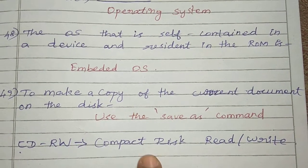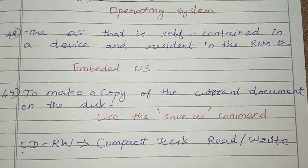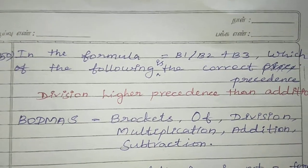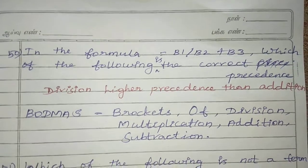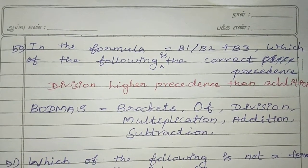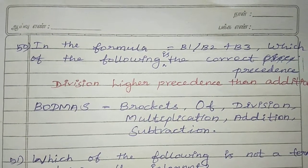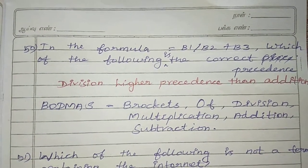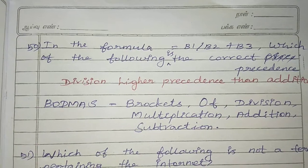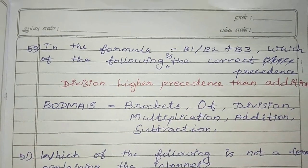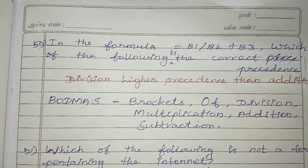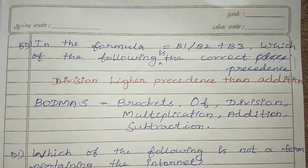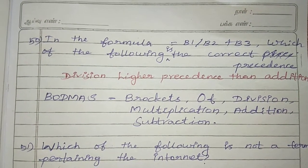CD-RW means Compact Disk Read and Write. Question 50: In the formula equal to B1 divided by B2 plus 3, which of the following is the correct precedence? The answer is division has higher precedence than addition.